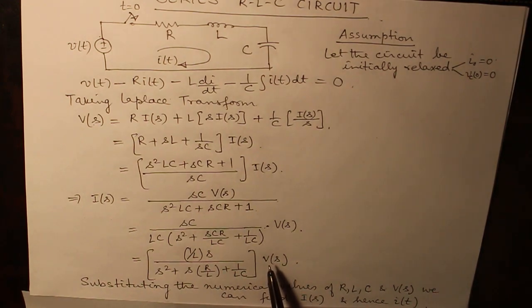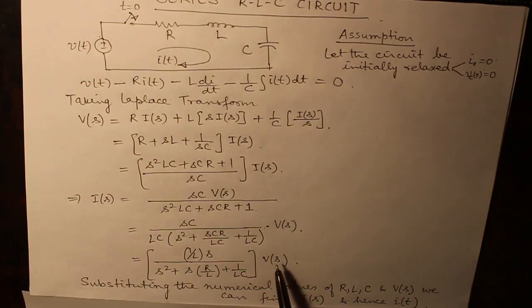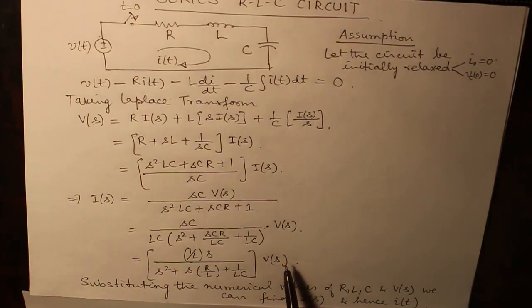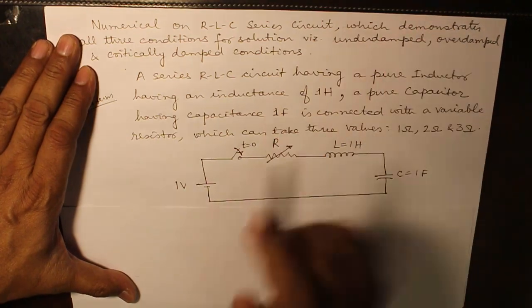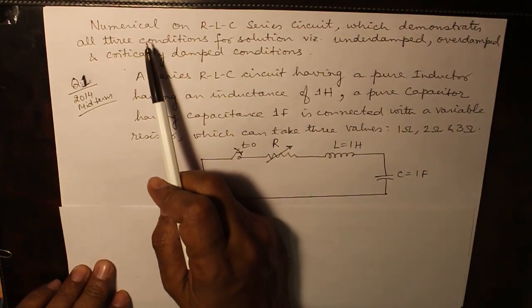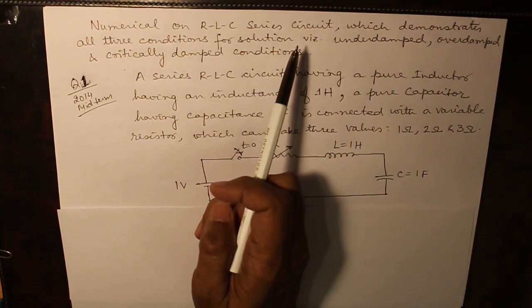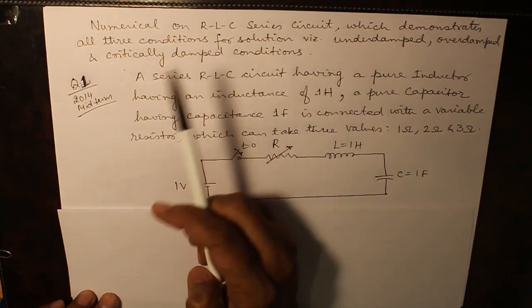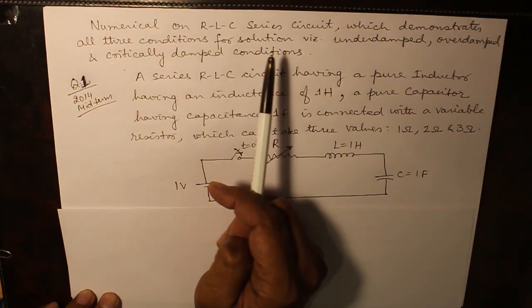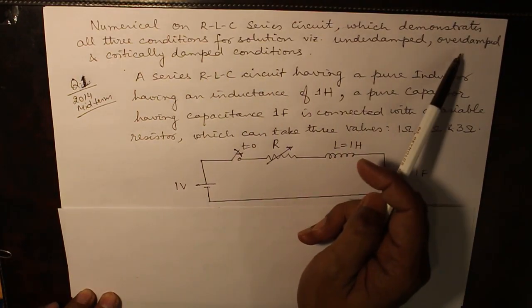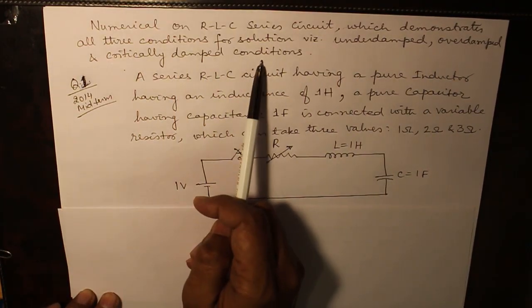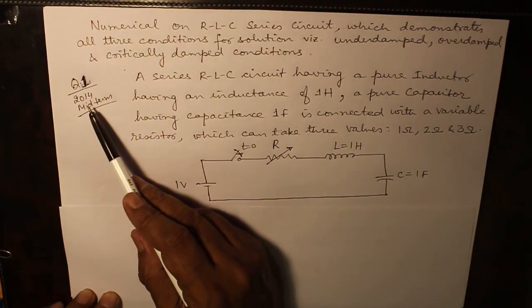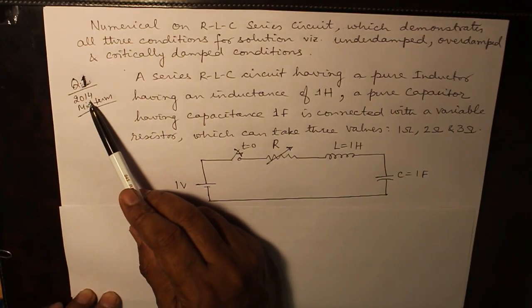So we will take up an example and by the help of the numerical we will be in a position to know all the three cases of underdamped, overdamped and critically damped RLC circuit. So with the help of a numerical on RLC series circuit we are going to demonstrate all the three conditions. This has also been asked in midterm exam of 2014.